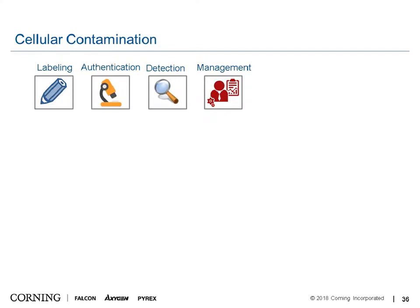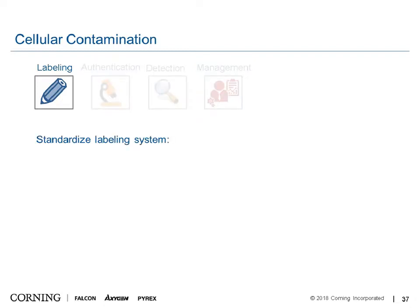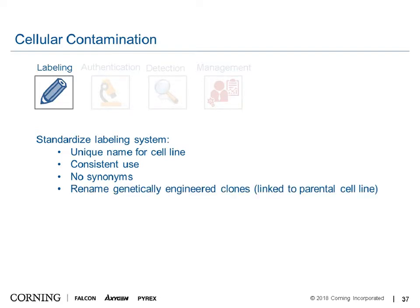How do you prevent or manage cellular contamination? It's very important to start with a proper labeling system so that cells are labeled correctly and you don't mistake one cell line for another. Ideally the whole lab or department would have a standardized label system. Some tips: start with a unique name for each cell line and use it consistently — don't make synonyms or abbreviations once it's established. Rename genetically engineered clones and try to link them to the parental cell line.